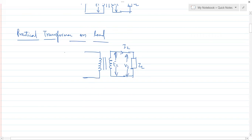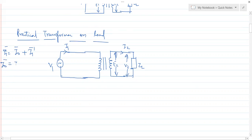On the primary side, the supply voltage will be V1 and the overall current will be the supply current. We know that I1 current is the phasor sum of I0 and I1'. We also know that the I0 current is the phasor sum of IM and IW.